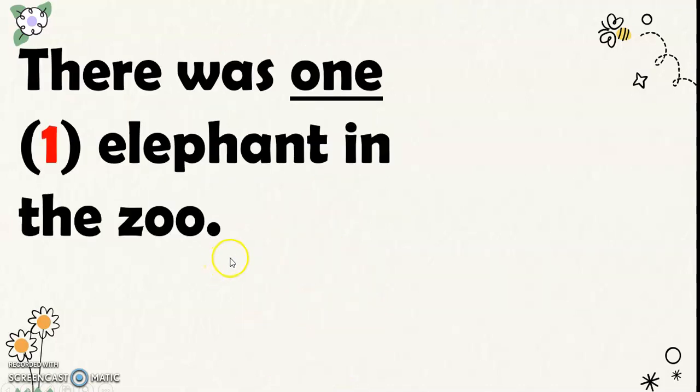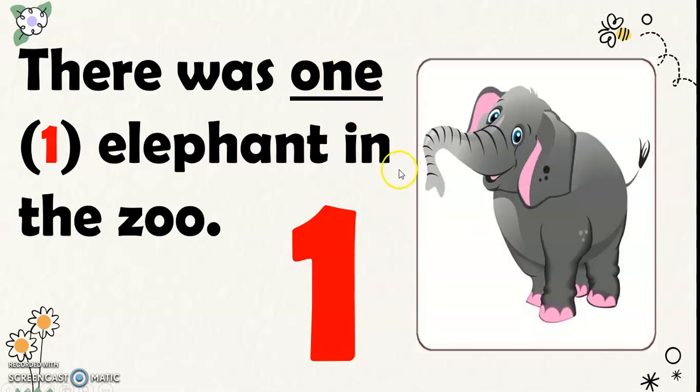Next, there was 1 elephant in the zoo. This is the number symbol for 1, and this is 1 when written in word. And there's 1 elephant in the zoo.